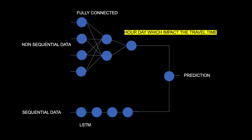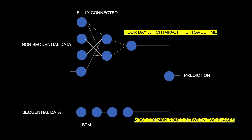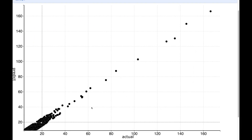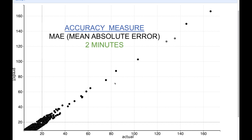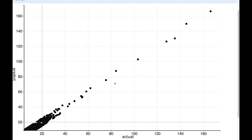In summary, the fully connected layer identifies useful features in non-sequential data — such as hour and day — that impact travel time, while the LSTM layer identifies the sequence of places usually taken by taxi rides. Here is the result of the complete machine learning model, shown as a scatter plot of actual travel time versus predicted travel time. Generally, as the actual time increases, the predicted value also increases. The accuracy measure is the MAE, or mean absolute error, which is around two minutes — meaning the model can predict travel time with an error of only two minutes compared to actual, which is a highly accurate result.